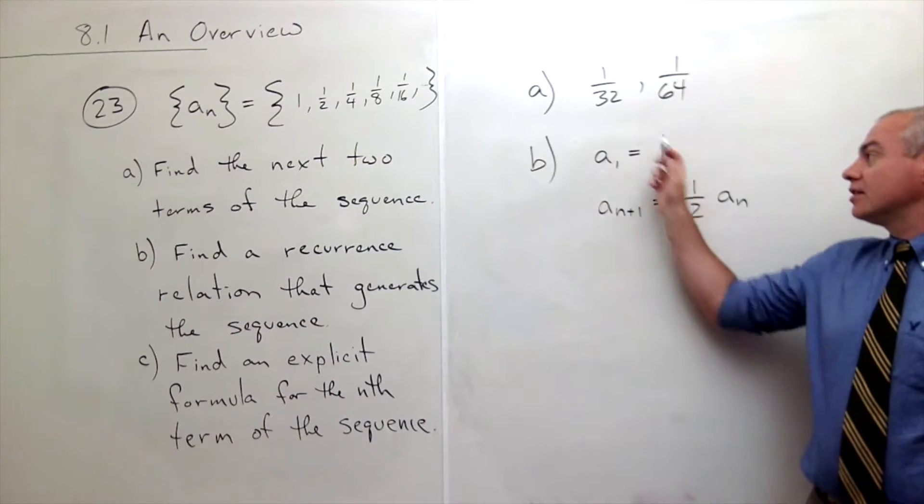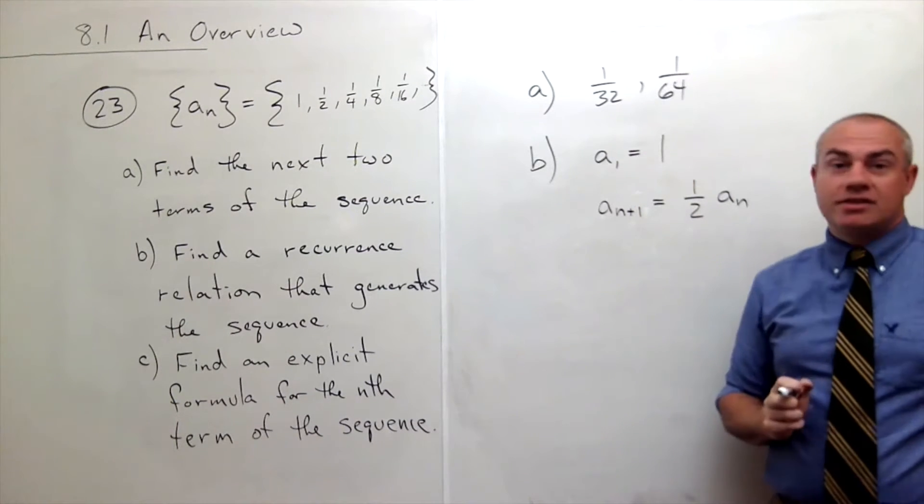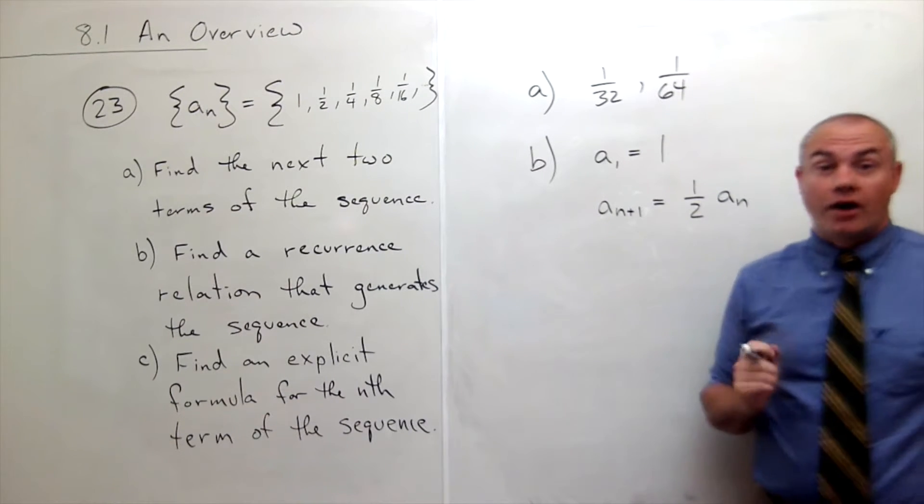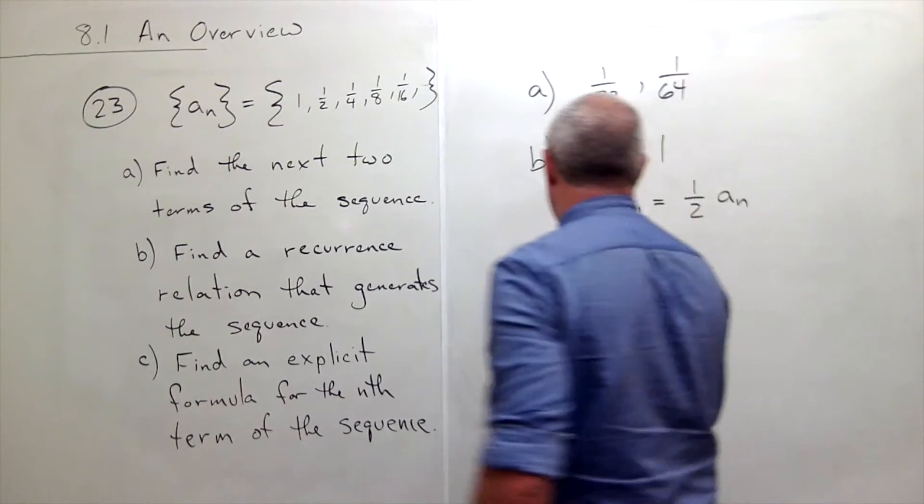And so these two pieces of information together is what I call my recurrence relation. Let's look at part c.